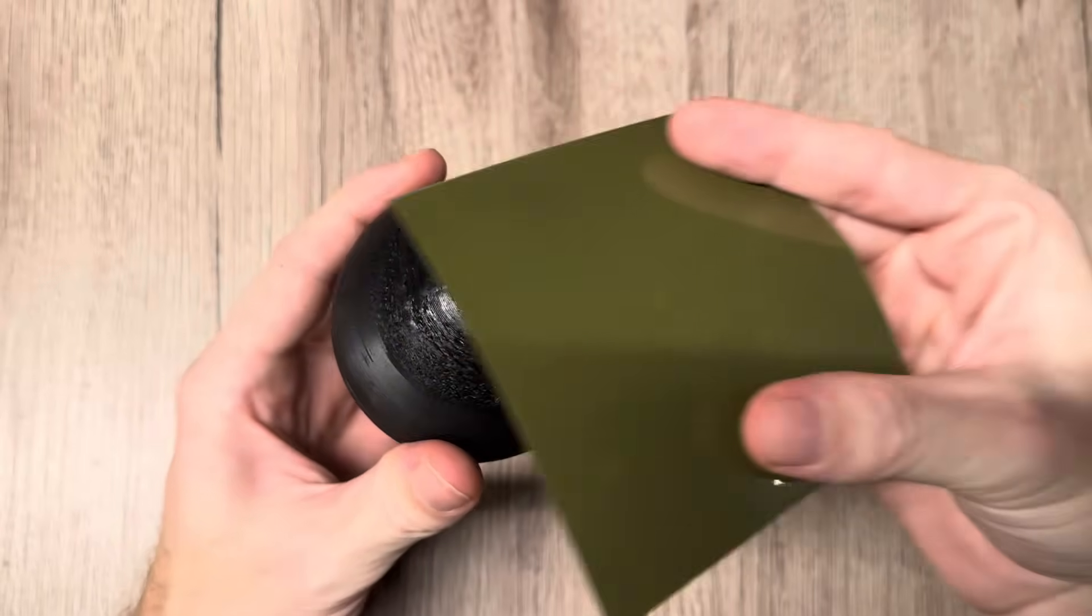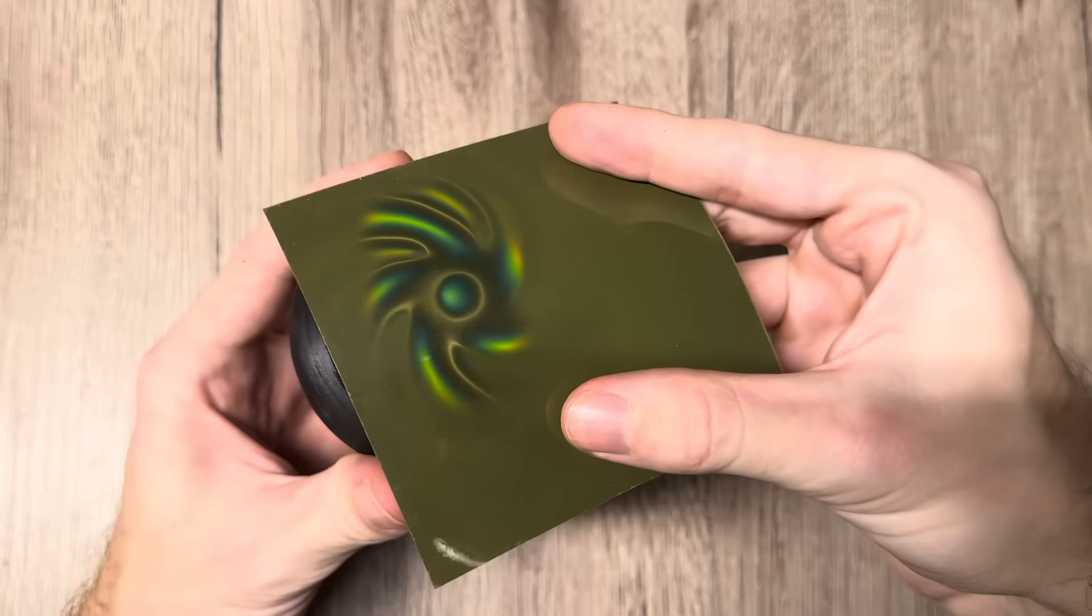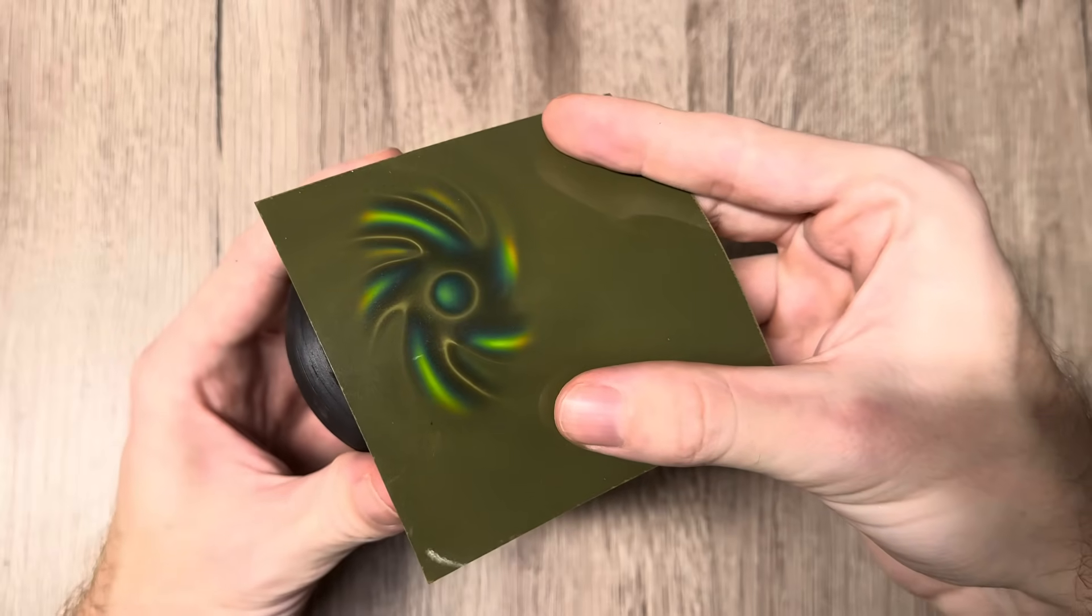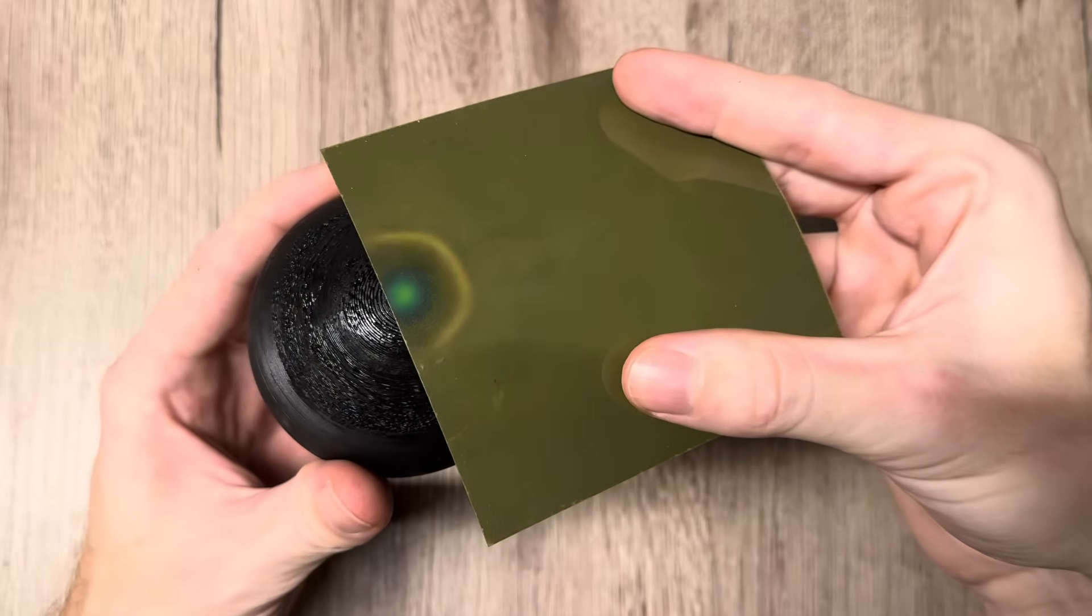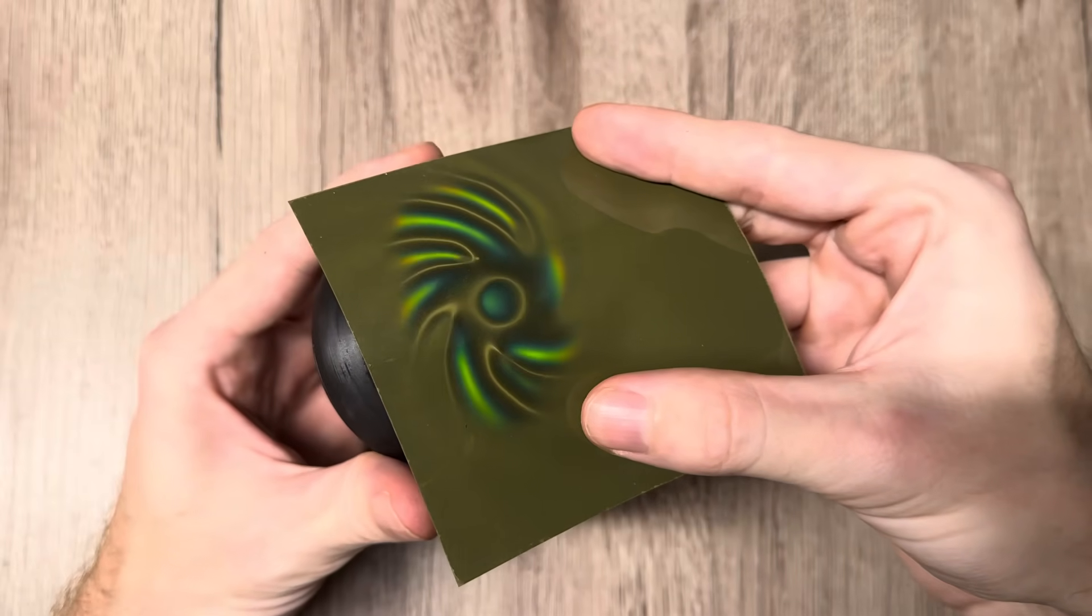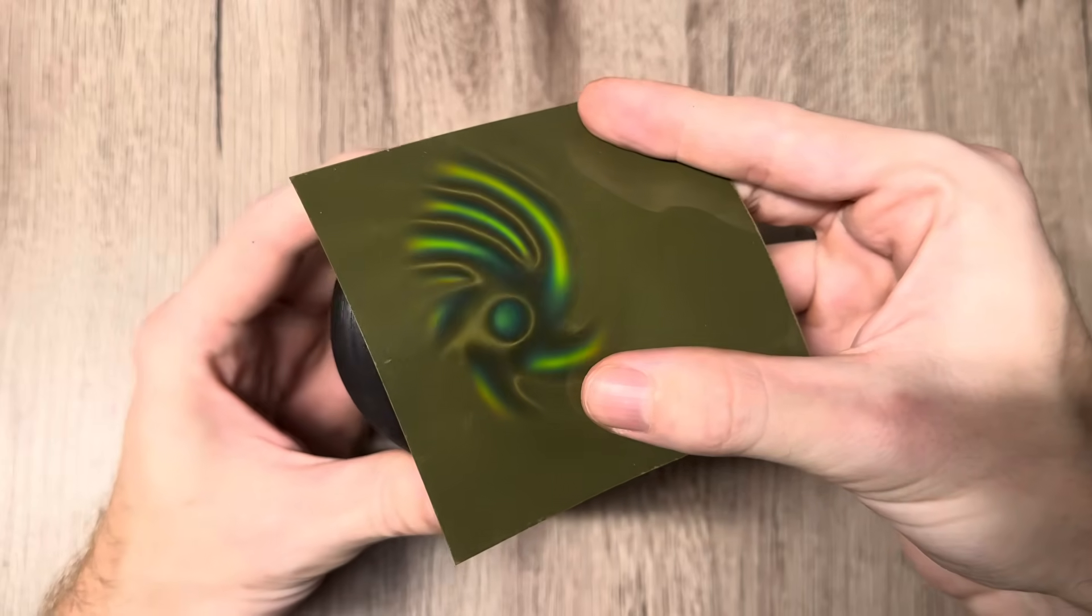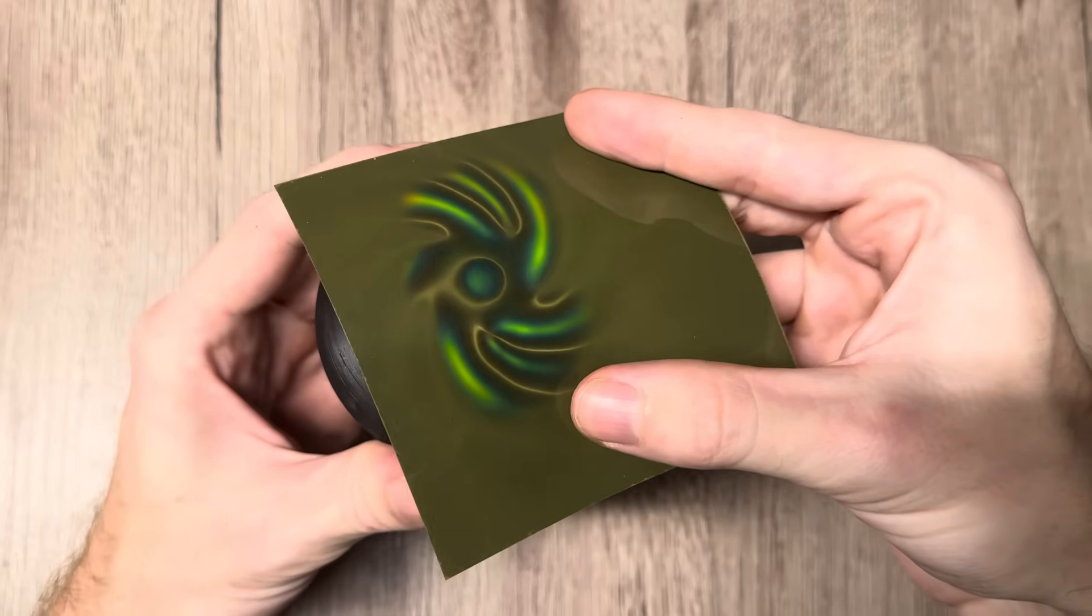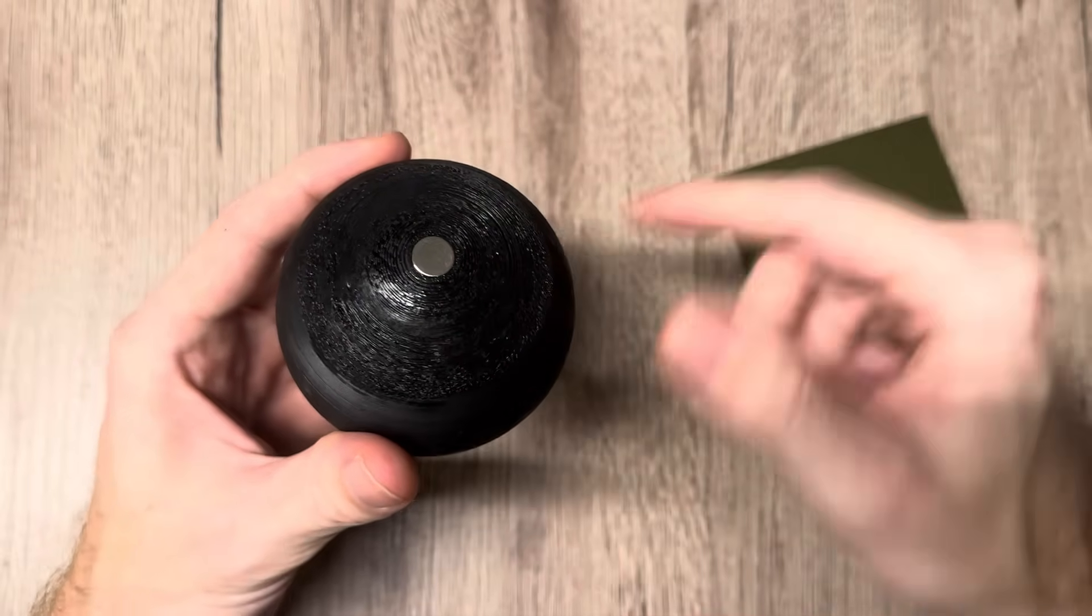As you can see when I bring my field viewer closer like this, we do have polarity and also a magnetic field right at the center here. What you can also see is the spirals have changed a lot. It was a total of ten spiral arms, but now when we have north pole here, all the north pole arms are connected by each other as you can see.